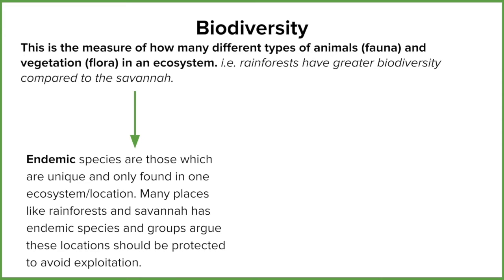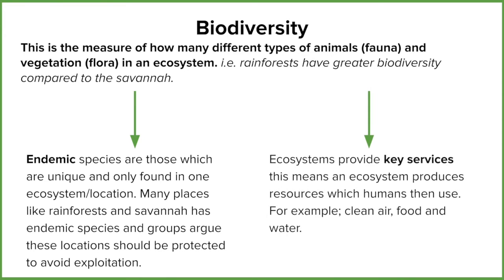The second reason is that our ecosystems provide key services, and they do that through the biodiversity that's available in them. A key service is something that produces a resource or a service to us as a global community and the planet as a whole. An example would be providing clean air, water, or food for us.